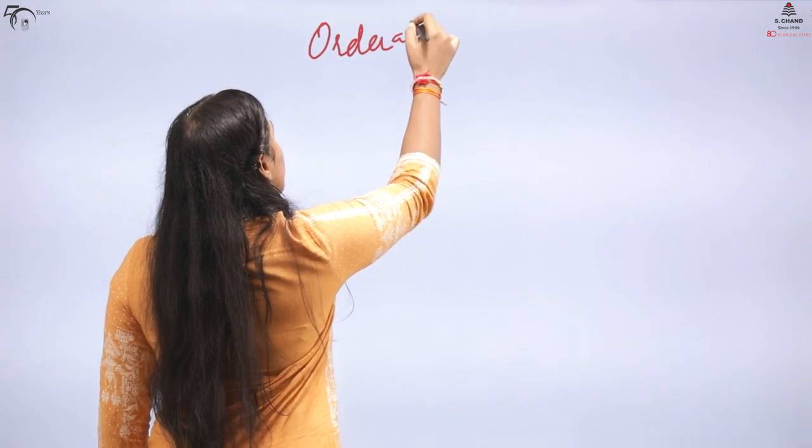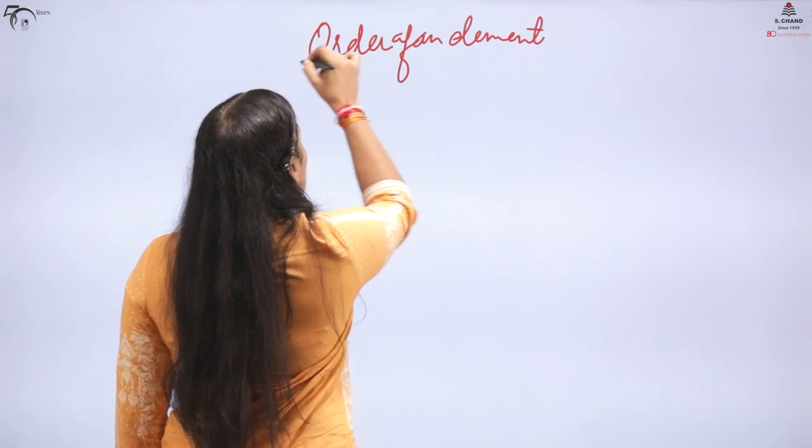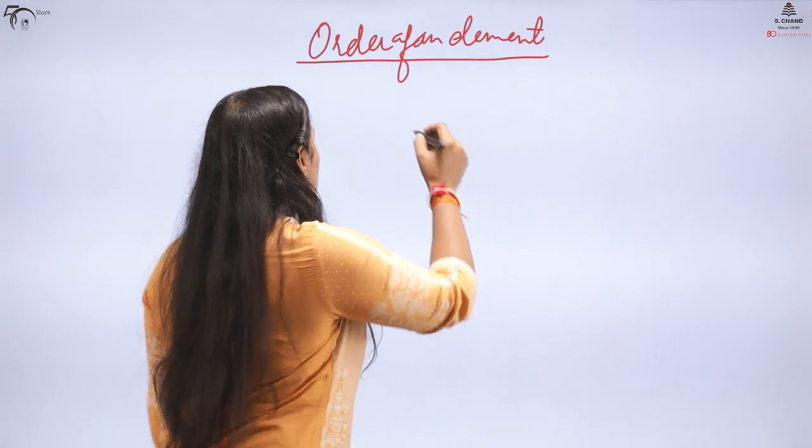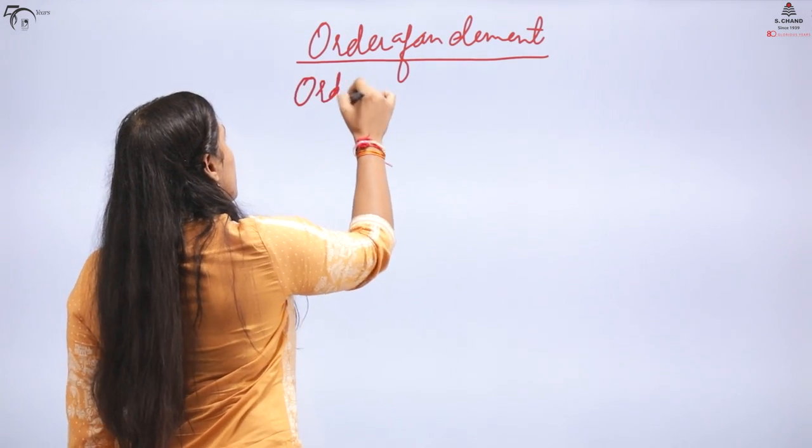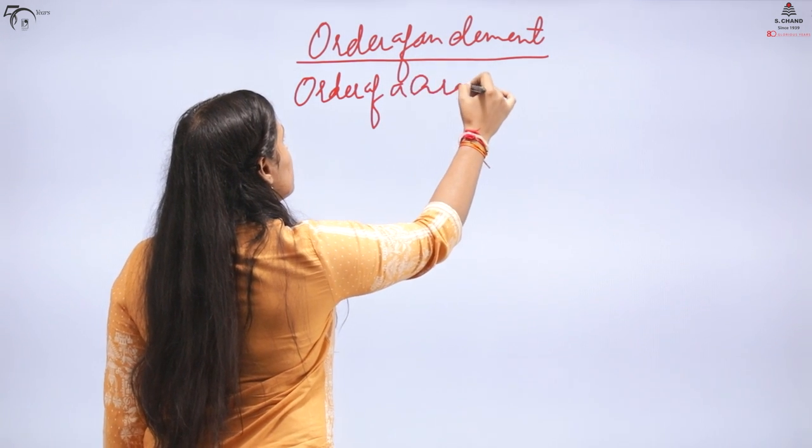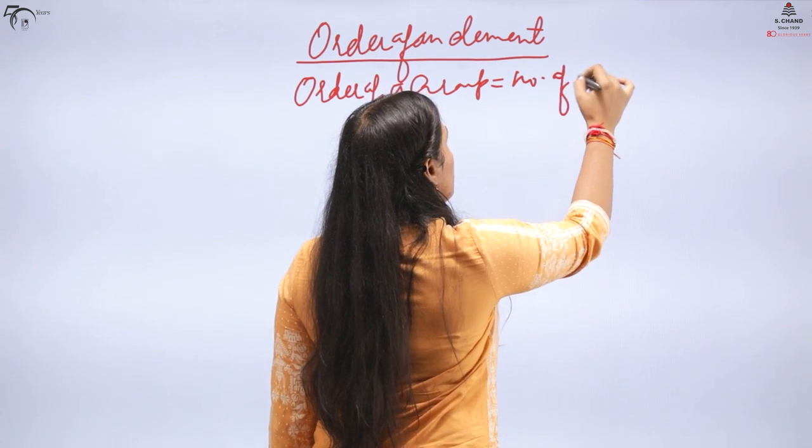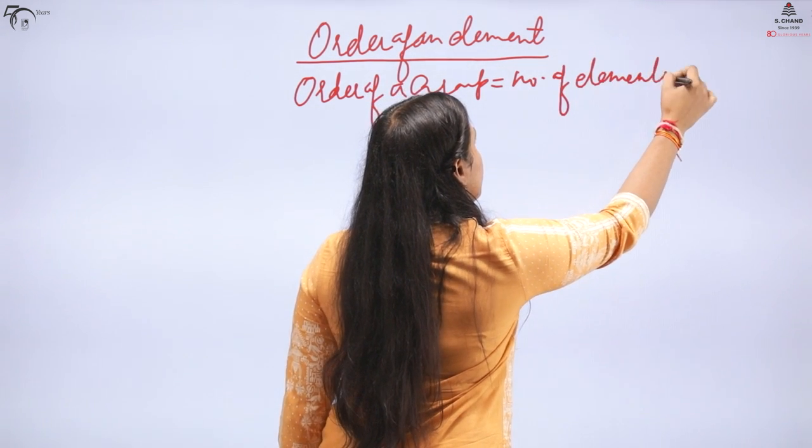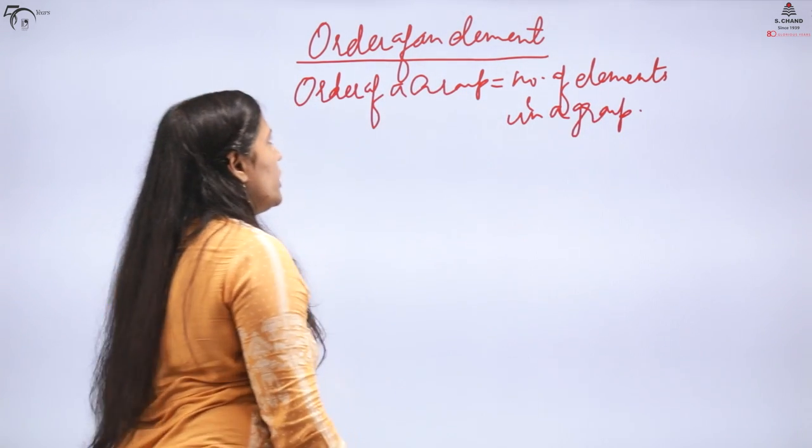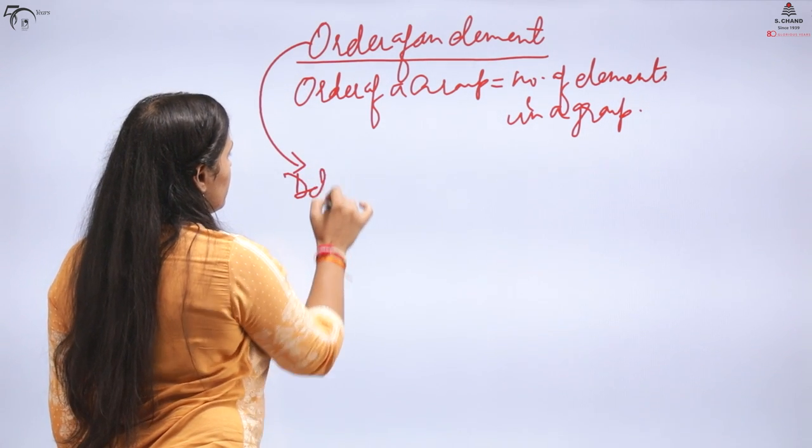Order of a group we know already. Order of a group means number of elements in a group.